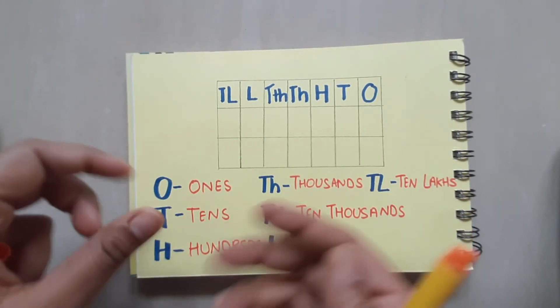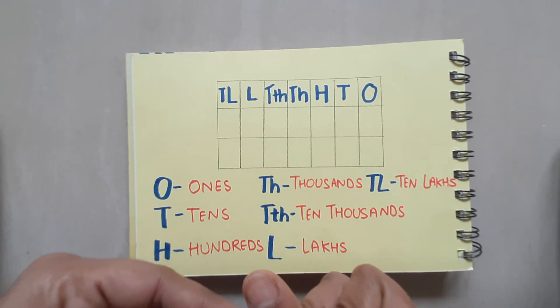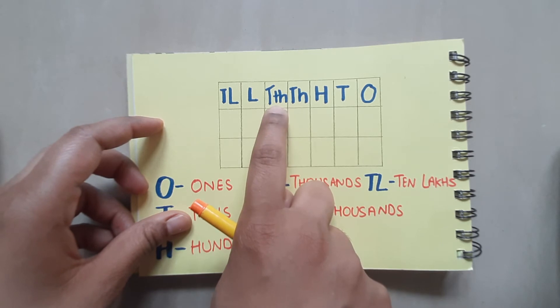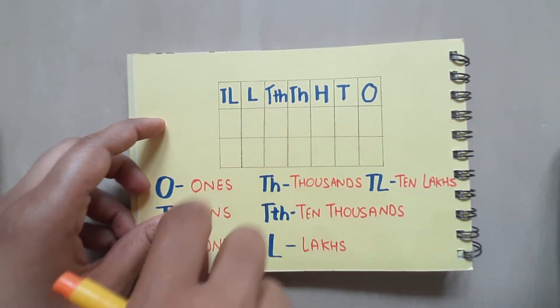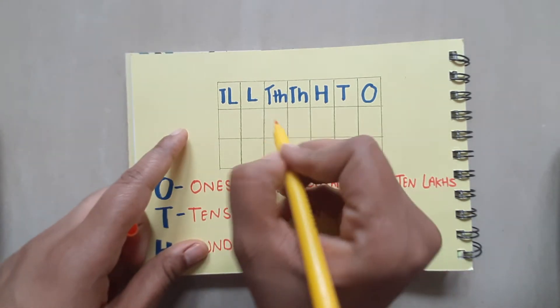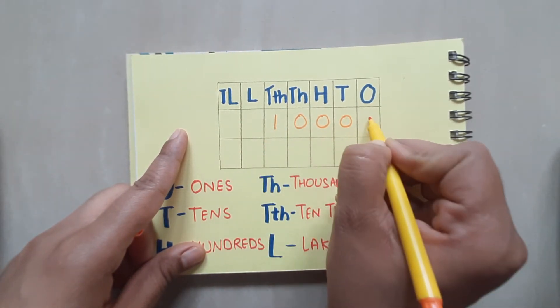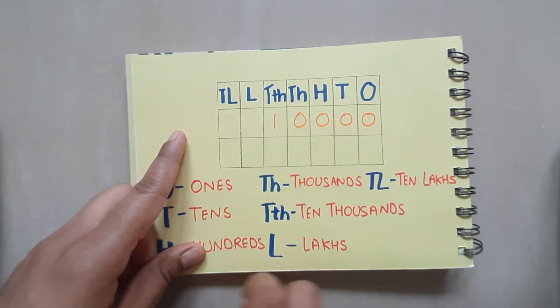Now, as I have already told you, the concept of smallest 5 digit number, how a new place is added. So here, the new place that has been added, it is 10,000. After 1000, we have 10,000. And the number has been written like this. The place of 1 is 10,000.